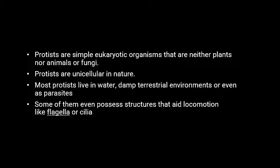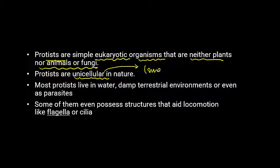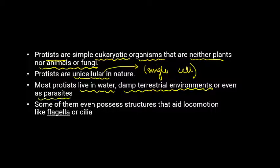Coming to characteristics: Protista basically includes simple eukaryotic organisms that are neither plants, nor animals, nor fungi. Protista are unicellular in nature — single cell. Most Protists live in water, terrestrial environments, or even as parasites inside the body of other living organisms.